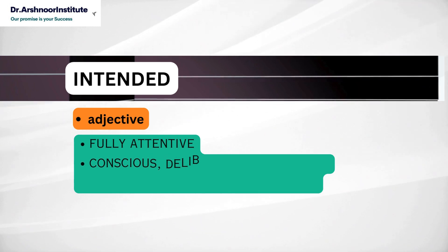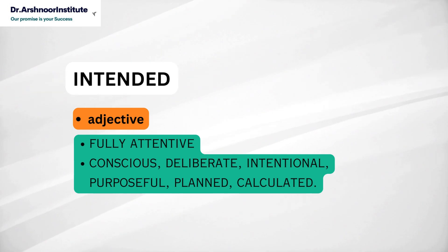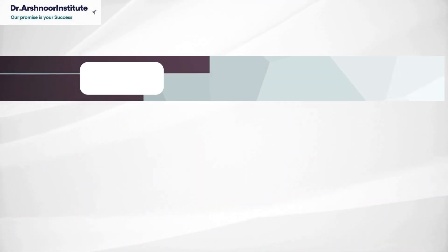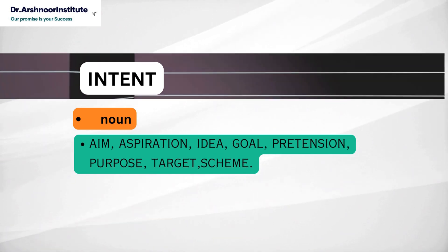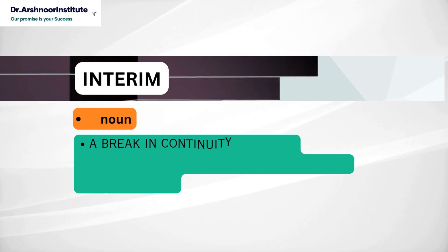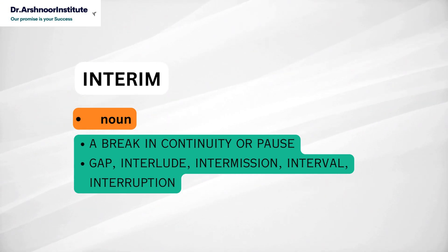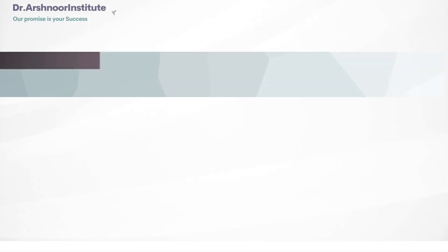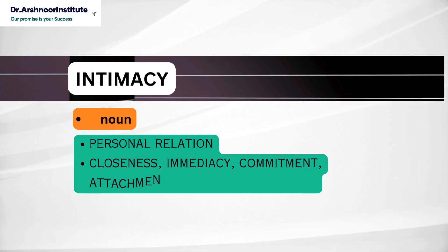The next word is intended. It's an adjective. It means fully attentive and its synonyms are conscious, deliberate, intentional, purposeful, planned, calculated. Next word is intent. It's a noun. It means aim, aspiration, idea, goal, pretension, purpose, target, scheme. Next word is interim. It's a noun. It means a break in continuity or pause and we use the synonyms gap, interlude, intermission, interval, interruption. And the next word is intimacy and it's a noun. It means personal relation. So use the synonyms in the form of closeness, immediacy, commitment, attachment, affection, fondness.